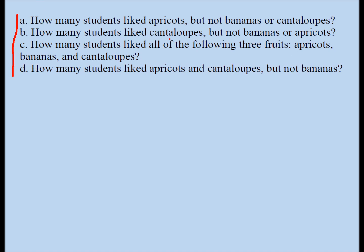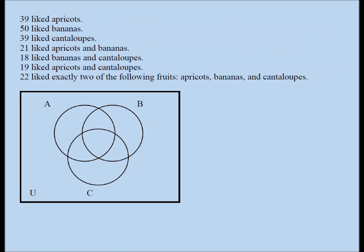Let's go ahead and draw our Venn diagram. A stands for apricots, B for bananas, C for cantaloupes. 39 liked apricots, so these four numbers should add up to 39. 50 liked bananas, so these four numbers should add up to 50. And these four numbers should add up to 39 because 39 students liked cantaloupes.